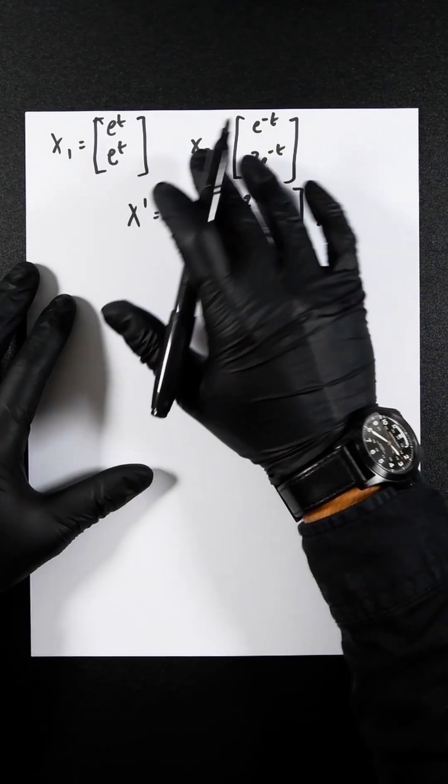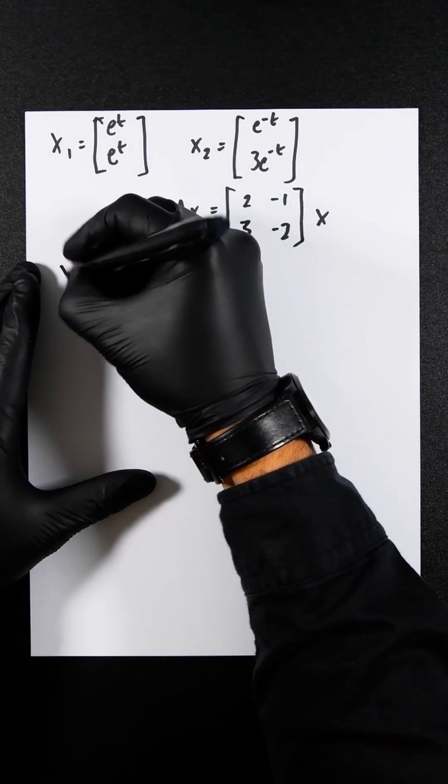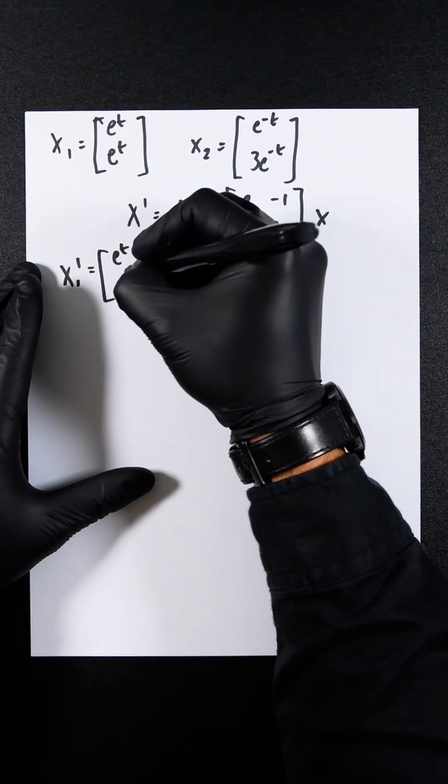So let's verify these functions or solutions to this homogeneous system. The first thing that we're going to do is differentiate this once, which is going to be e to the t.